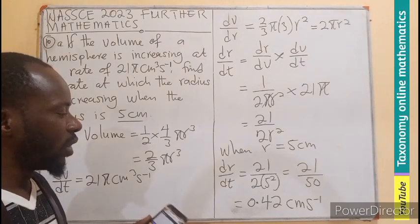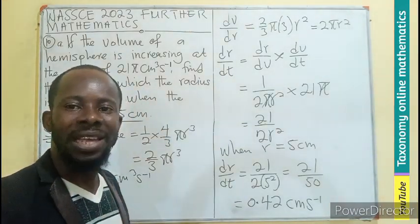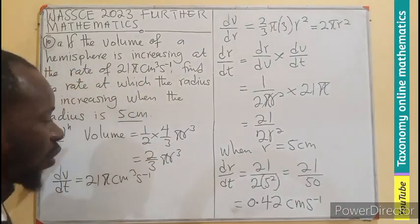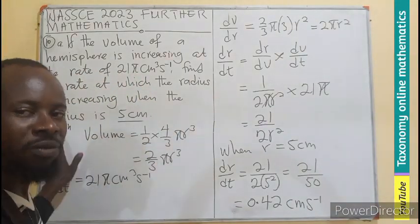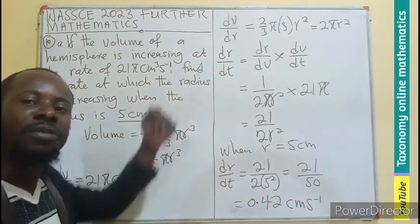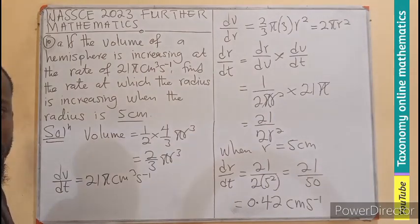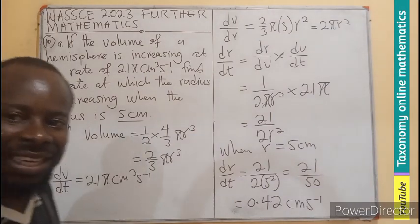We are looking for the rate of change. So this is going to be 0.42 centimeters per second. So this is also an application of calculus, whereby we talk of the rate of change. And the rate of change employs the principles of the chain rule.